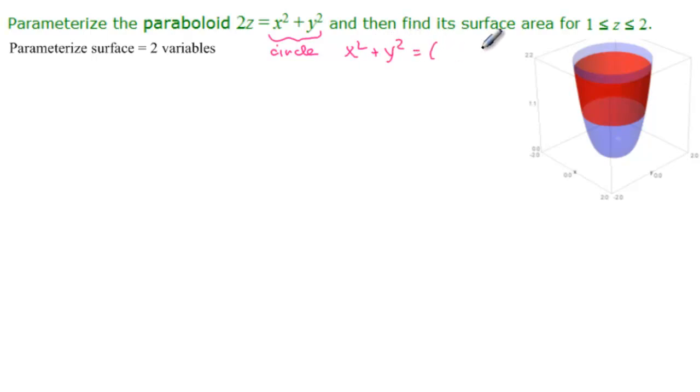And we would want something squared here. And so what will we get? The square root of 2z. And so this is what we're going to be using as our radius here.